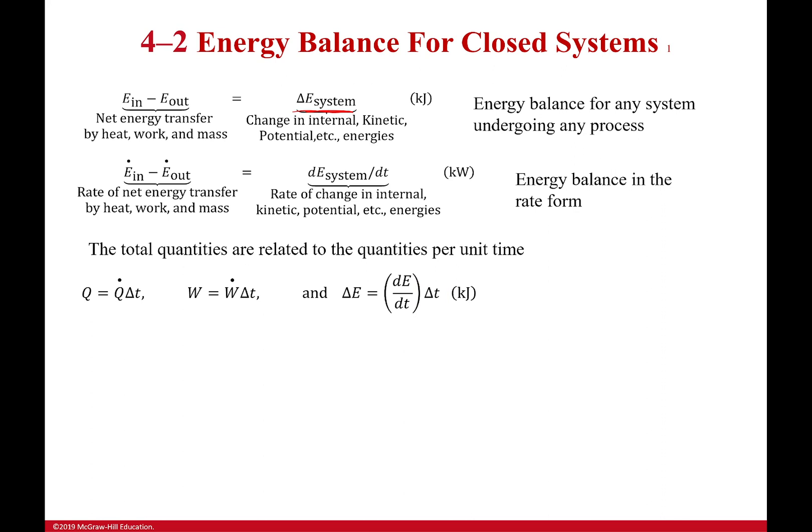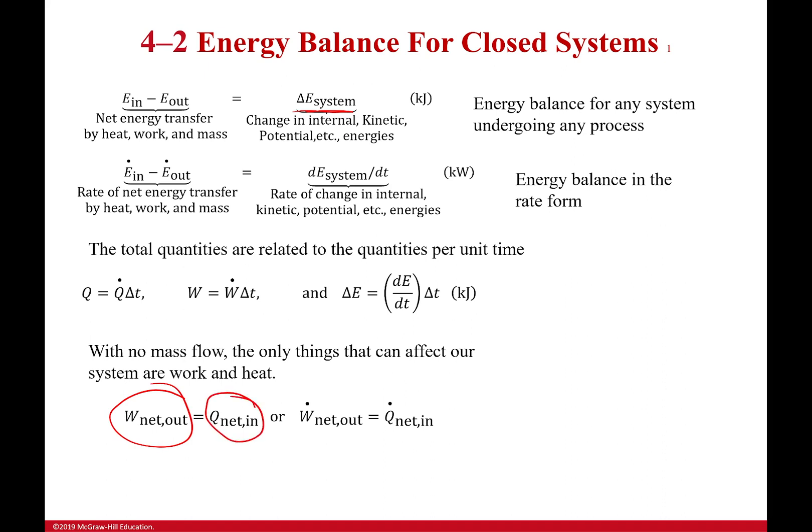Now we have a system that we're dealing with where the mass flow is zero. There is no mass flow. Because of that, the only thing that can affect our system is heat and work. And so what we'll eventually find out is that our net work output is going to be equal to our net heat input, or for power as well. And we see that from a cycle.